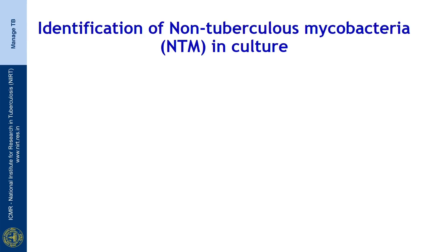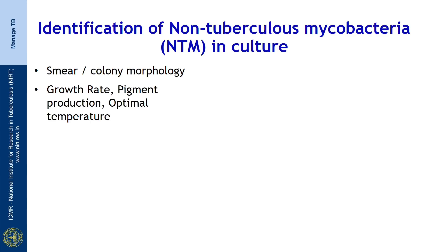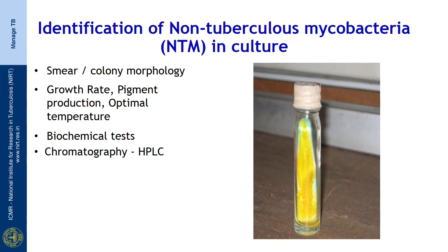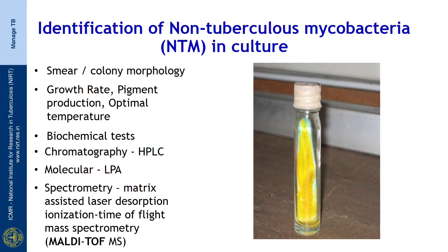We now come to non-tuberculosis mycobacteria (NTM) in culture. Primary identification of NTM in culture is done by smear and colony morphology, growth rate, pigment production, and optimal temperature requirements. This is an example of M. kansasii, which produces pigment and appears yellow in colour. Species-level identification of NTM can be done by a battery of biochemical tests, by chromatography, by molecular tests such as line probe assay, or by MALDI-TOF mass spectrometry.